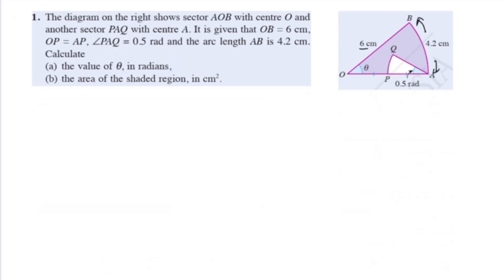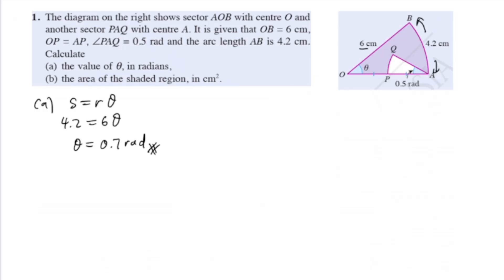We use s equals r theta. Your arc length is 4.2, your radius is 6, and theta is what we are finding. Use your calculator: 4.2 divided by 6 gives 0.7 radians. Remember when you use the formula s equals r theta, your angle is always in radians.